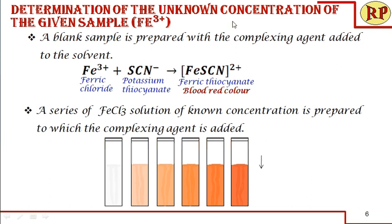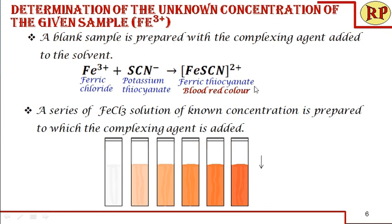Now, how to determine the unknown concentration of a given sample. For this example, we have taken Fe³⁺ concentration. We need a blank sample and a series of known concentrations. To analyze Fe³⁺ ions, we can take any ferric salt such as ferric chloride or ferric nitrate. Since ferric chloride solution is not coloured, we use a complexing agent — potassium thiocyanate or ammonium thiocyanate — which produces ferric thiocyanate, which is blood red in colour. The uncoloured sample is thus made coloured.